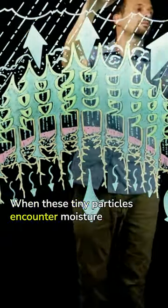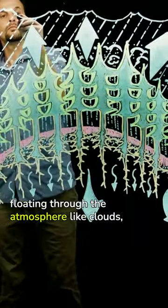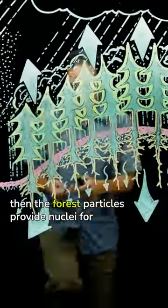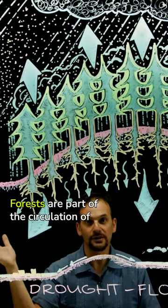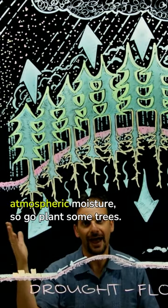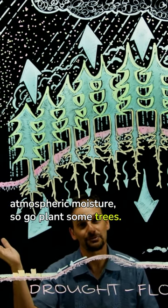When these tiny particles encounter moisture floating through the atmosphere like clouds, the forest particles provide nuclei for raindrops to form around. Forests are part of the circulation of atmospheric moisture, so go plant some trees.